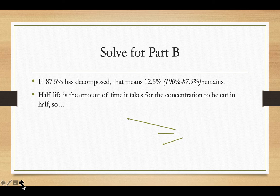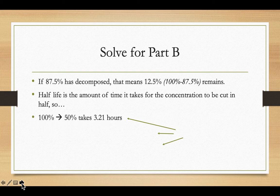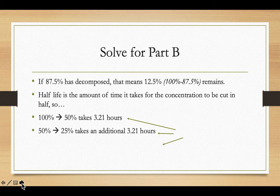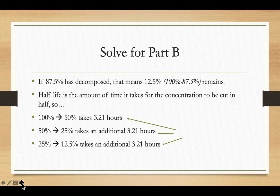Part B asks how long it would take for 87.5% of the sucrose to decompose. If 87.5% has decomposed, 12.5% remains. Using the half-life of 3.21 hours: it takes 3.21 hours to go from 100% to 50%, another 3.21 hours from 50% to 25%, and another 3.21 hours from 25% to 12.5% remaining. So to go from a 100% sample to 12.5% remaining takes 9.63 hours total — three half-lives.